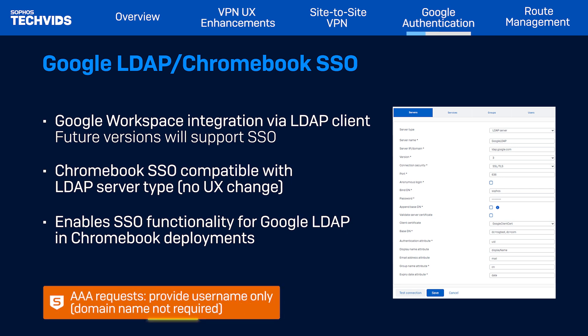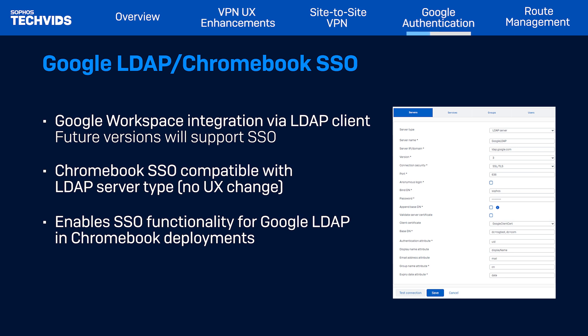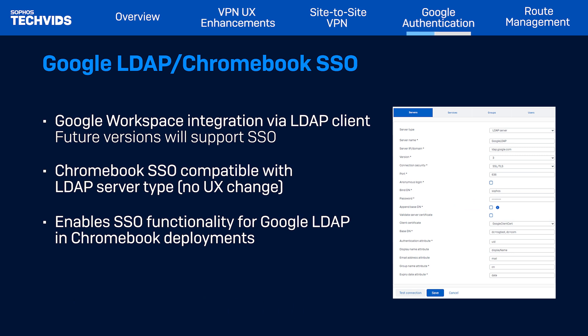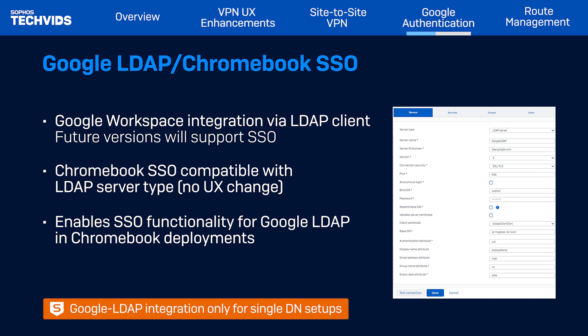Google Workspace does not require a domain for AAA requests, so it is recommended to provide the username without the domain during authentication. Additionally, ensure that the append-based DN checkbox is not selected on the server configuration page. It is important to note that the Google Workspace integration via the existing LDAP client workflow is designed for single DN environments.